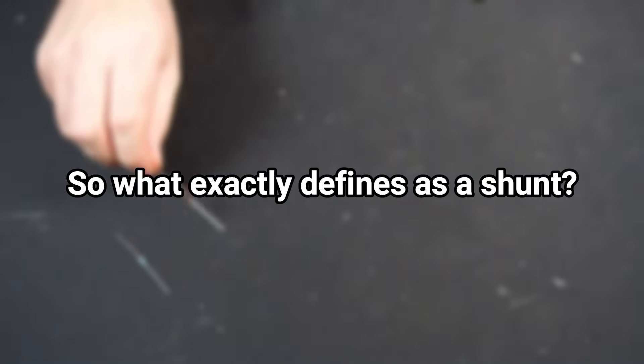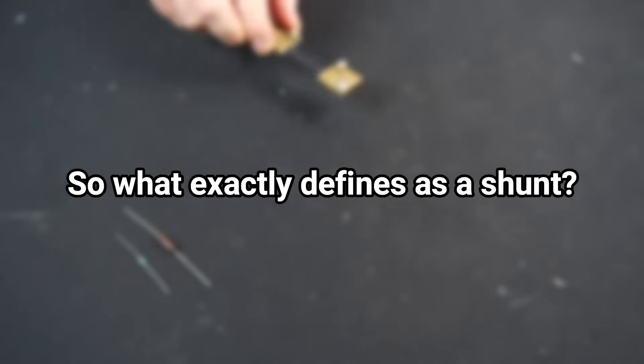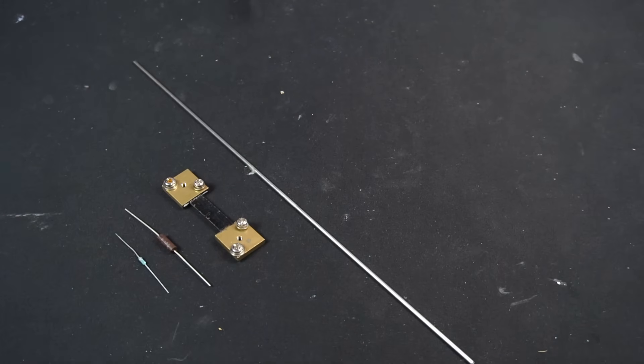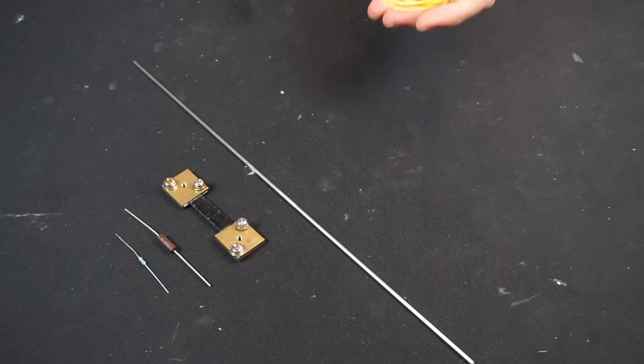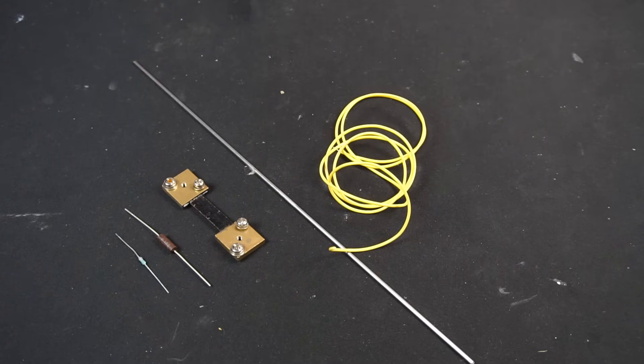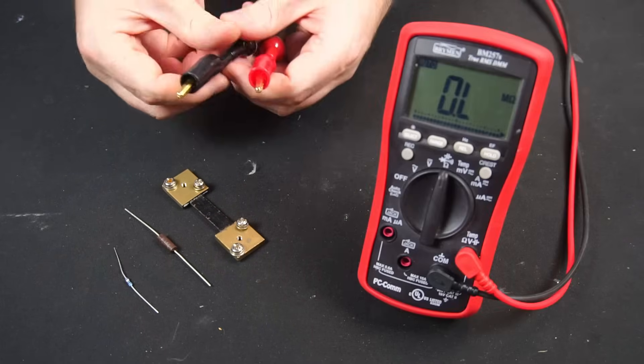And this rather ordinary looking wire jumper on the circuit board is also a shunt. So shunts come in a wide range of varieties. So what exactly defines a shunt then? Well, in a nutshell, a shunt is nothing more than a conductor which has some value of resistance, typically in the milliohm range.